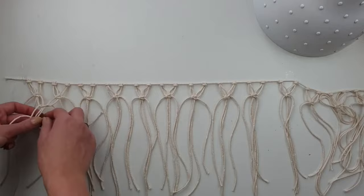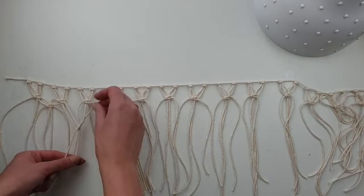Once the first row is done, I create another row of square knots. This time I'm using two loose cords from adjacent knots.